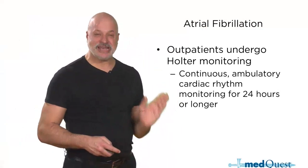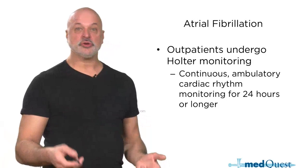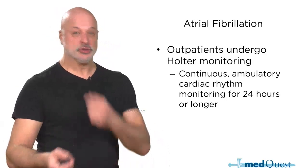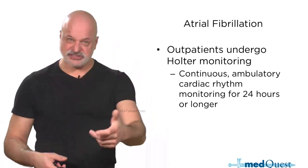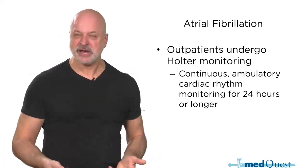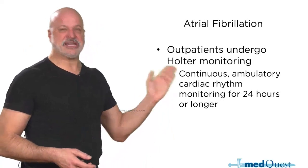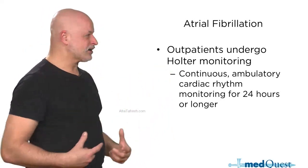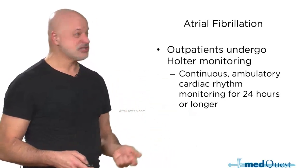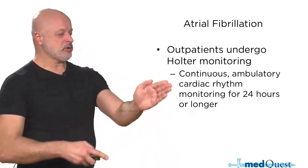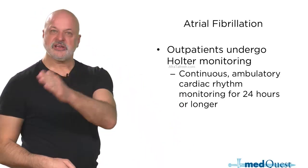You can do continuous ambulatory monitoring for as long as you want. You can put in an implantable loop recorder, which lets the patient click when they have symptoms — an event monitor. The standard is wearing an electrical monitor with wires for a day, which is then instantly analyzed to see if there are PVCs, VPCs, AFib, and flutter.